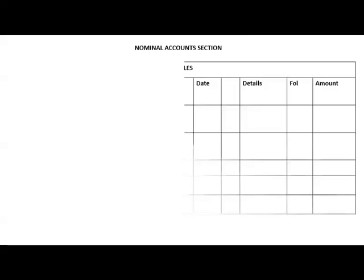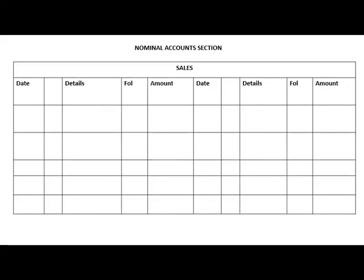Now I'll take the 4,700 total sales from the debtor's journal. This represents the total amount owed to the business for the month from credit sales. It will be recorded on the debit side of debtor's control and the credit side of sales. In debtor's control, the balance brought down was already 2,000. We add the DJ amount of 4,700, posting as sales. Debtor's control carries down a balance of 6,700. In the sales account, which already has a balance brought forward of 10,100, we record debtor's control from the DJ for 4,700 on the credit side. We don't need to calculate a balance carried down here because sales is a nominal account.